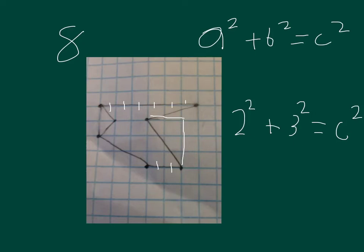Okay, 2 squared is equal to 4. So it's 4 plus 3 squared, which is 9, equals the square root of 13. So this side is the square root of 13.